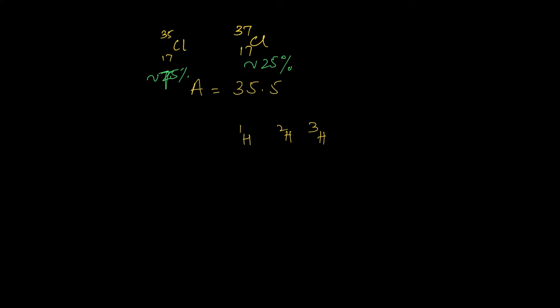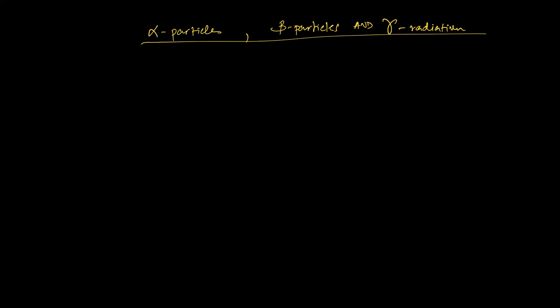Now that we've covered those definitions, we can start talking about radioactivity. Some elements have nuclei which are unstable — the combination of protons and neutrons is such that the forces acting on the nucleons don't balance. In order to become more stable, the nucleus has to release particles or electromagnetic radiation. Such nuclides are said to be radioactive, and this emission is called radioactivity. These emissions are invisible to the naked eye, but you can use a device called a cloud chamber to make the tracks of these emissions visible. When this was first studied, three different types of emissions were identified: alpha particles, beta particles, and gamma radiation — all originating from the nucleus.